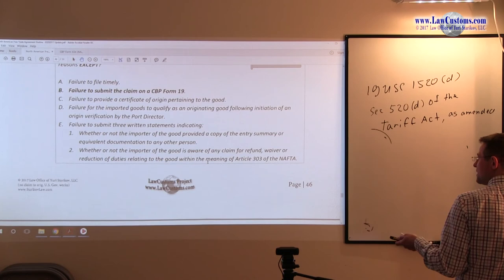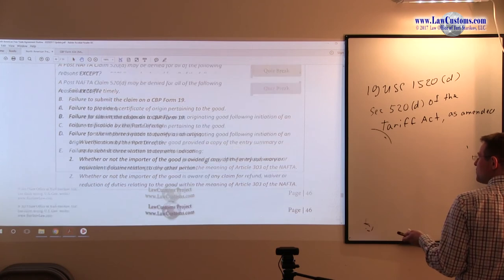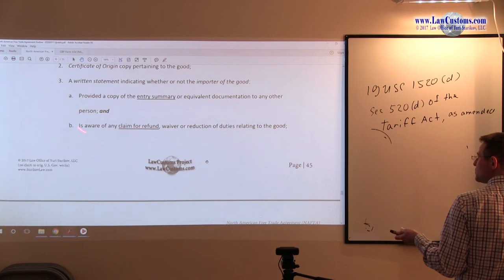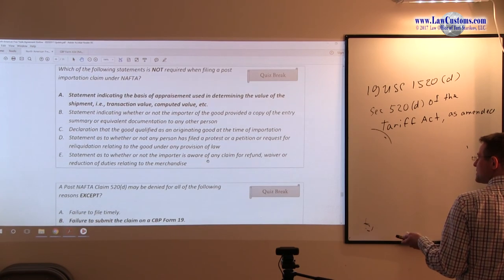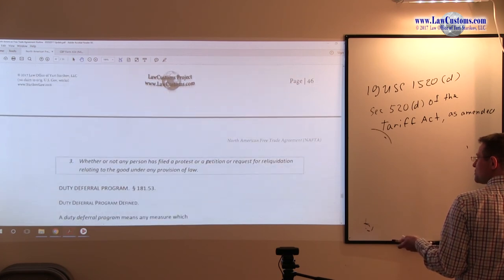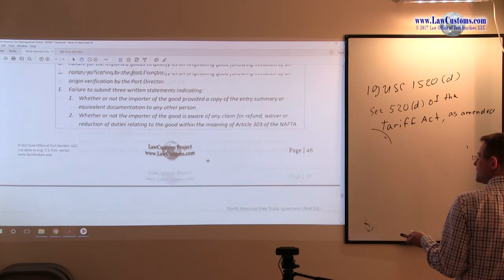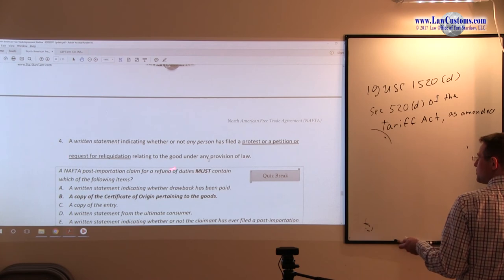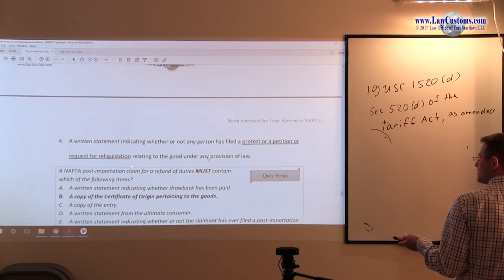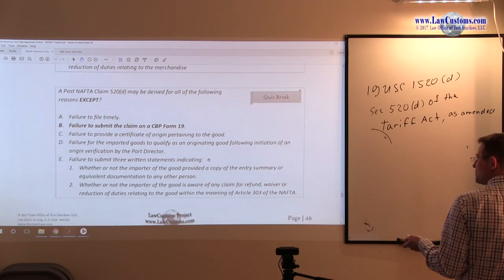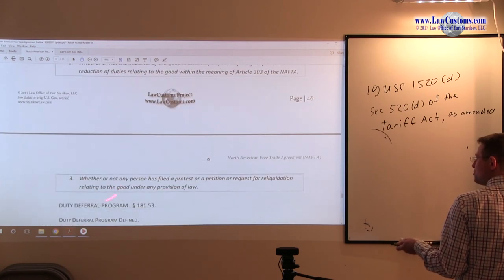Awareness of claim for refund. We also saw that as a part of the requirement. Awareness of a claim for refund. So then the second option is also okay. And the third option is filing a protest or petition to request a liquidation. Copy and paste under any provision of law is also part of the laundry list. So third point is okay.